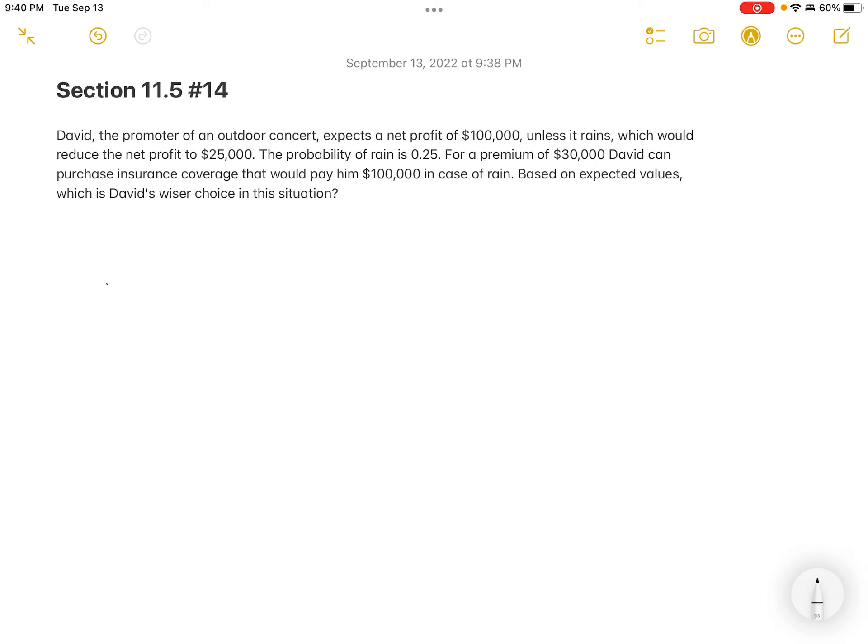The probability of rain is 0.25. And then for a premium of $30,000, he can purchase insurance that would pay him $100,000 in case it rained. And based on the expected values, what is David's wiser choice in this situation? So they're going to want to know, should we buy the insurance or should we not?